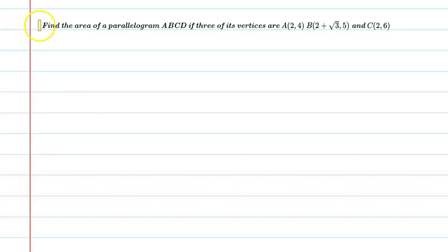Hello students, let's solve this question. Find the area of a parallelogram ABCD if three of its vertices are A(2,4), B(2 plus root 3, 5), and C(2,6). Alright.